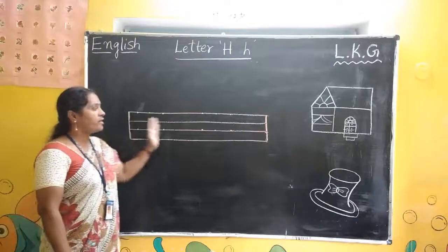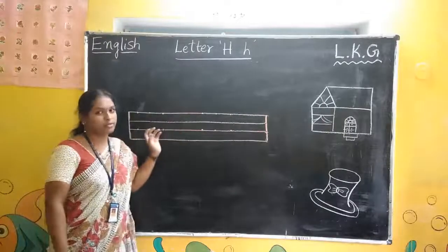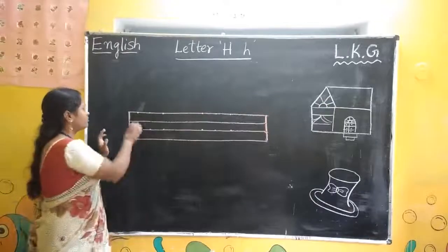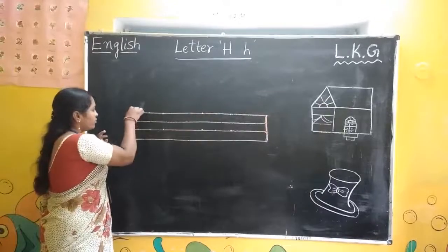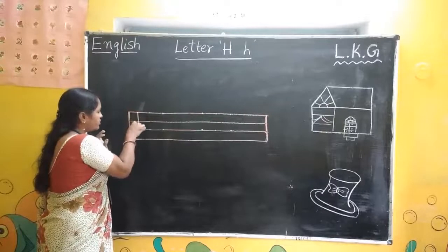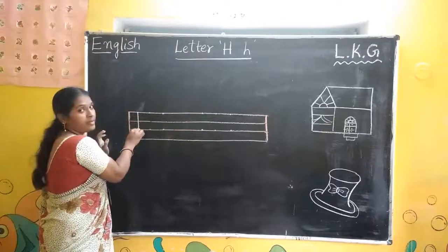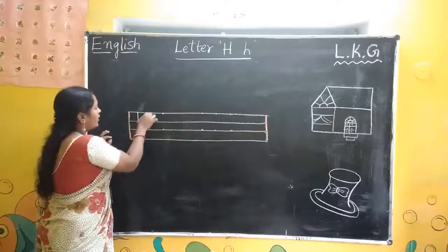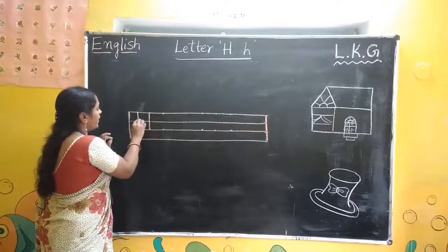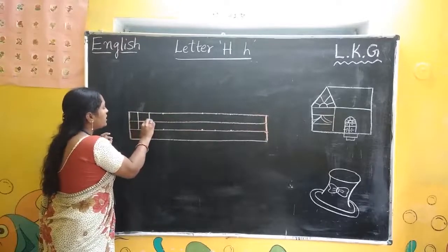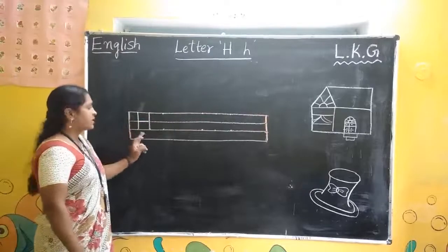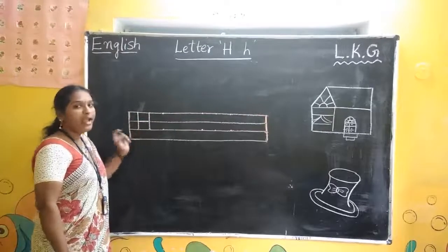Already I have here some dots. Let's start. First line to third line, standing line. Again, standing line. And sleeping line. This is capital H.